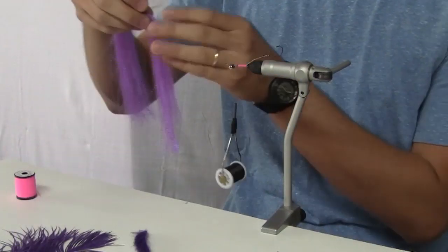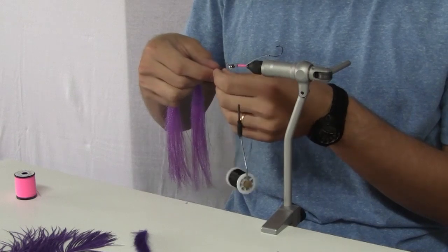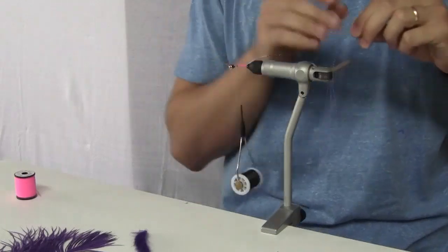Next we are going to add some purple crystal flash. I usually tie about three or four strands. This fly is gonna be used primarily for higher water, off-color, deep-swing presentation.